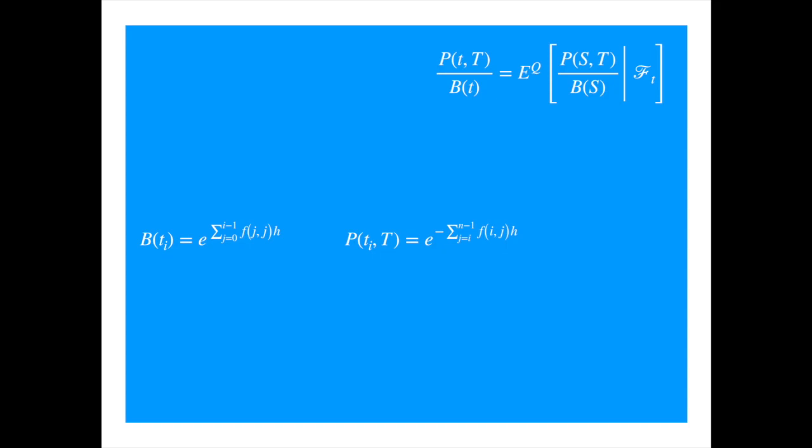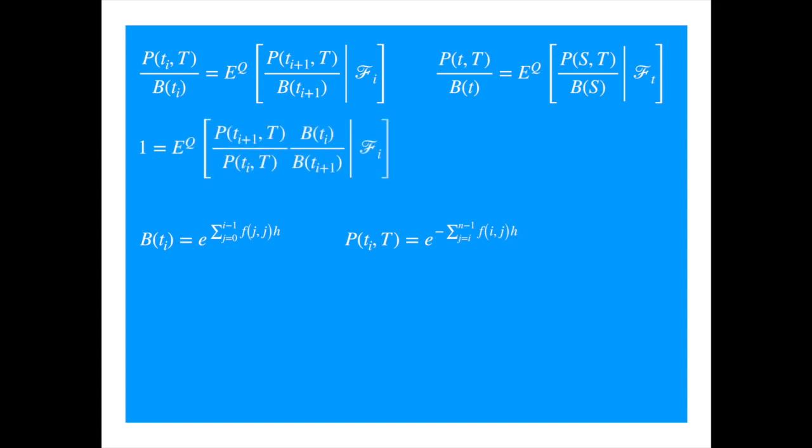We can write a discrete version of this as follows. And we can shift the B in the denominator to the right hand side, and take it inside the expectation, because it's a known constant. We need the values of the bank account and the zero coupon at the next step, which we can easily generate by shifting the indices.